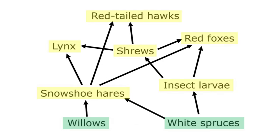In this food web, I've highlighted the producers in green and the consumers in yellow. You can see that every consumer has arrows pointing towards it, while all of the arrows are pointing away from the producers.